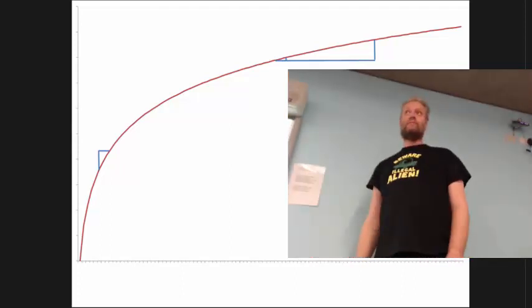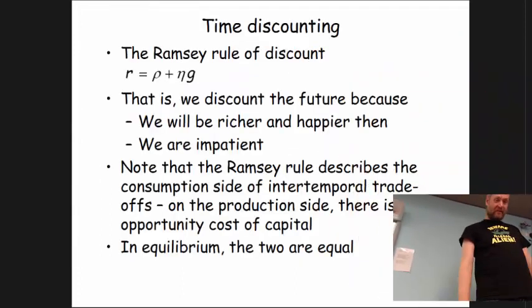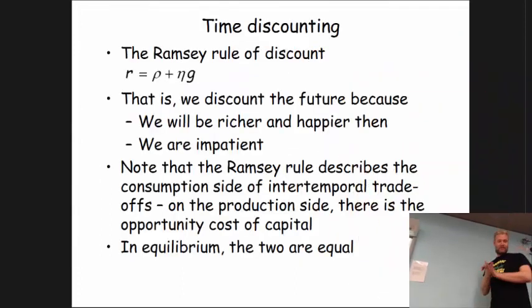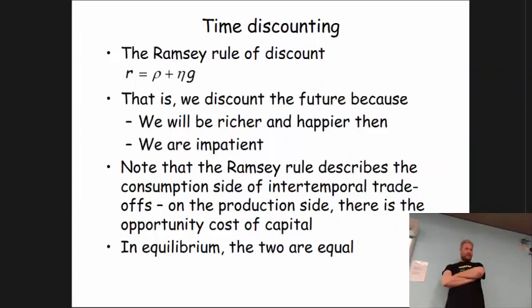Is that clear? That's eta*g. So we discount the future because we will be richer and happier — or we expect to be richer and happier, rather.